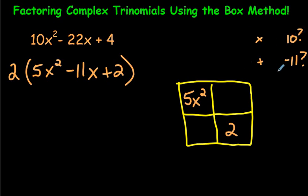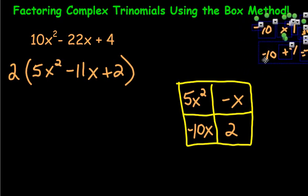5 times 2 is 10, but 5 plus 2 is not 11. It's going to have to be 10 and 1. And it would have to be both of these being negative. Because negative 10 plus negative 1 would equal negative 11. So our two numbers in these boxes, and it doesn't matter where you put them. Don't forget the x with them. Now what we're going to do is come up with the common factors, and we're done. So the box method is super quick.